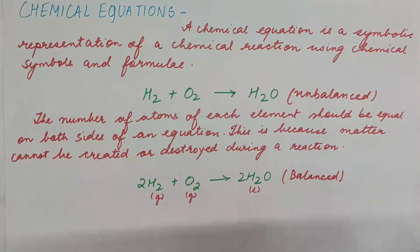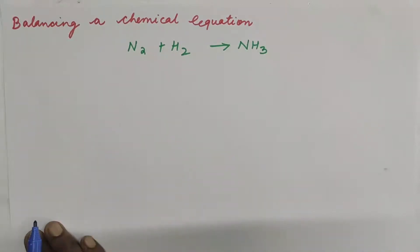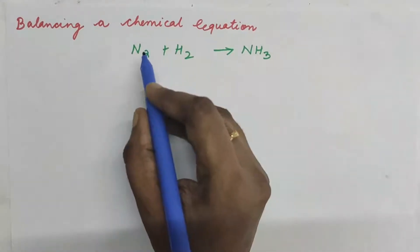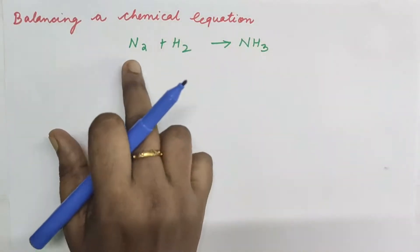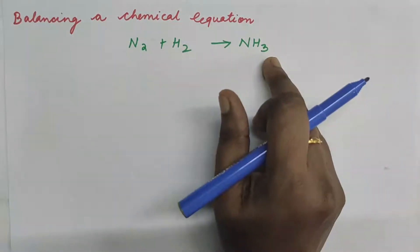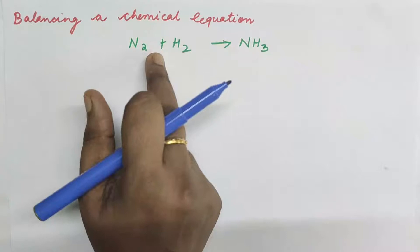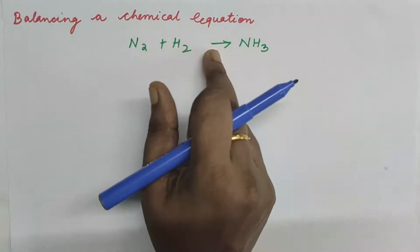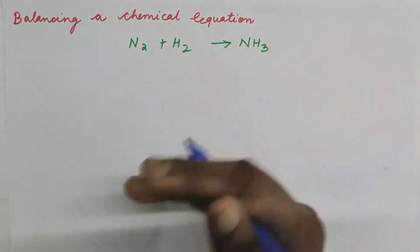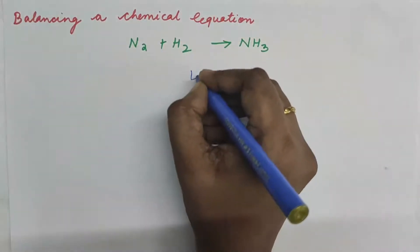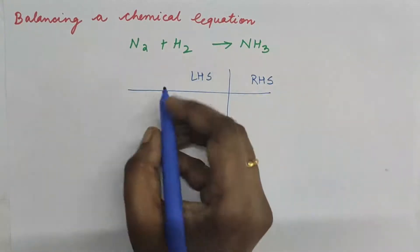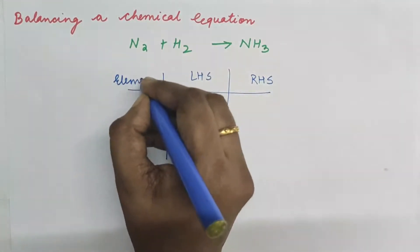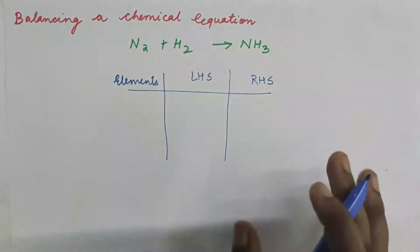Now let us learn how to balance chemical reactions. You may be given a word equation to convert into a chemical equation, or you may get an unbalanced equation that you need to balance. This reaction reads: nitrogen is combining with hydrogen to form ammonia. As you are just starting to balance equations, you can make a table of the left-hand side and right-hand side and the elements. Once you become thorough with balancing, you will not need to make this table.